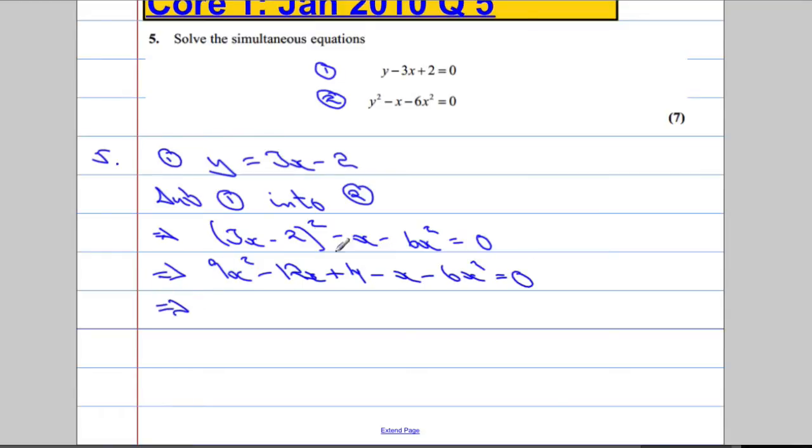Now what we're going to do is collect our like terms together. So 9x squared subtract that 6x squared, going to give us 3x squared. Negative 12x, take away that x, it's going to give us negative 13x in total. And then we're going to have this positive 4 at the end. That's going to be equal to 0.